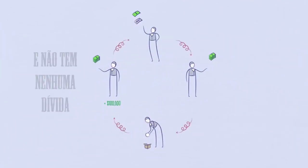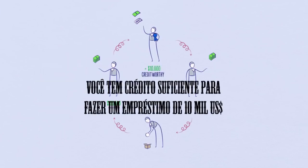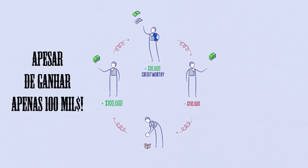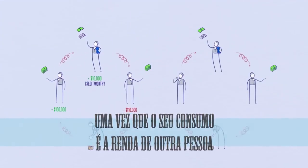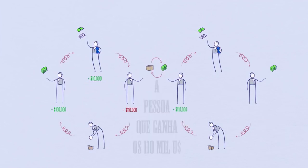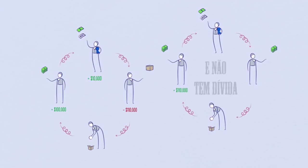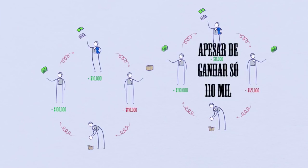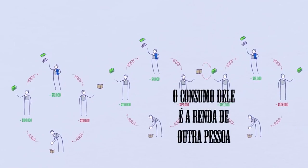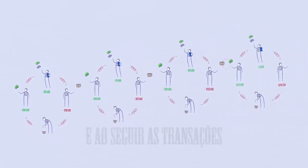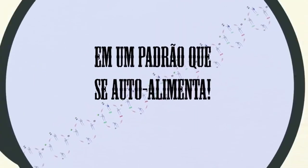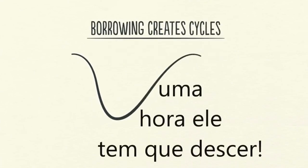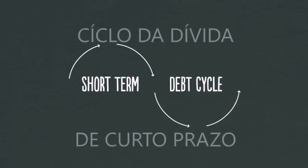Suppose you earn $100,000 a year and have no debt. You are credit-worthy enough to borrow $10,000 on a credit card, so you can spend $110,000 even though you only earn $100,000. Since your spending is another person's income, someone is earning $110,000. The person earning $110,000 with no debt can borrow $11,000 so he can spend $121,000 even though he has only earned $110,000. By following the transactions, we can begin to see how this process works in a self-reinforcing pattern. But borrowing creates cycles — if the cycle goes up, it eventually needs to come down. This leads us into the short-term debt cycle.